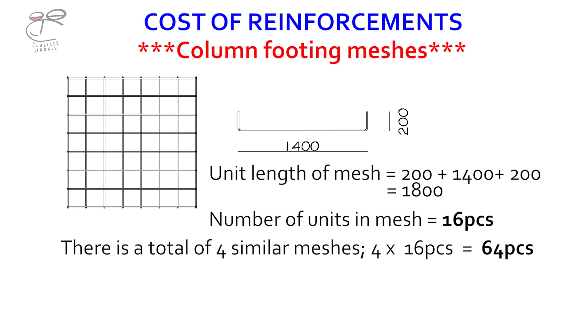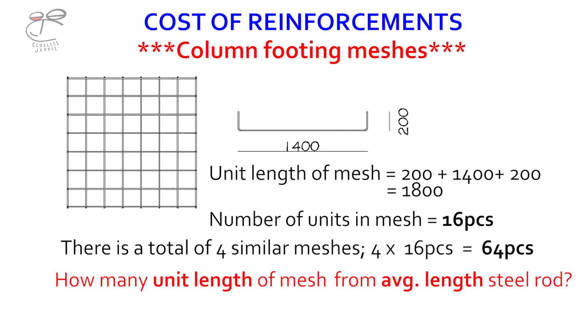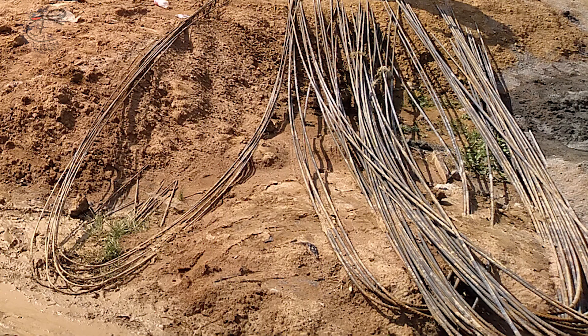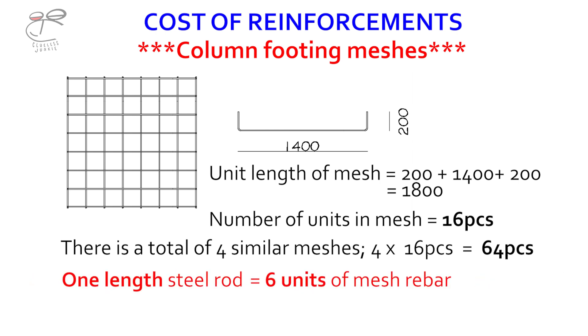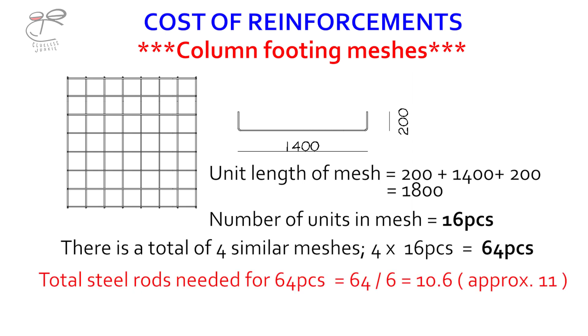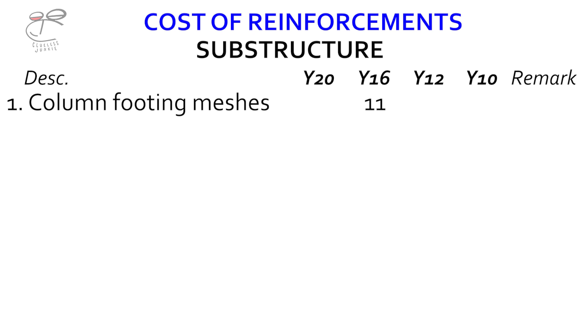There is a total of four meshes on the floor plan, so four times 16 gives 64 pieces. From the 64 pieces, how many lengths can be gotten from a regular length of iron? The average length of a steel rod is 12 meters, so we divide 12 meters by 1.8 — that gives 6.6, roughly 6 units; the 0.6 becomes an off-cut. So one length of steel rod gives 6 units of mesh rebar. We need 16 units for one mesh and there are four meshes, which is 64 units, so we divide 64 by 6 — that gives us roughly 11 units of Y16.